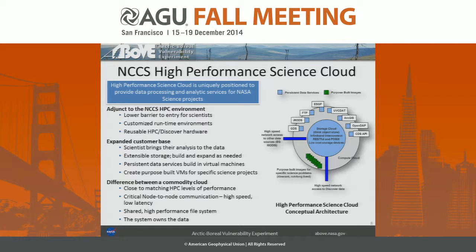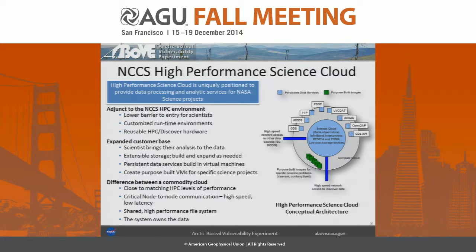What I really like, and I think is key to the success of this, is it's reusable HPC or Discover hardware — the high-performance computing system at NASA Goddard. Over a lifecycle of two, three, or four years depending on the purchase, these high-performance computing nodes are decommissioned. We take a large portion of that and cycle it into this cloud computing environment, so it's essentially free compute. When you have free compute, you can do a lot with that — this is compute over vast amounts of data storage, so scientists won't have to worry about the compute or the storage. They just bring their algorithms to the cloud.